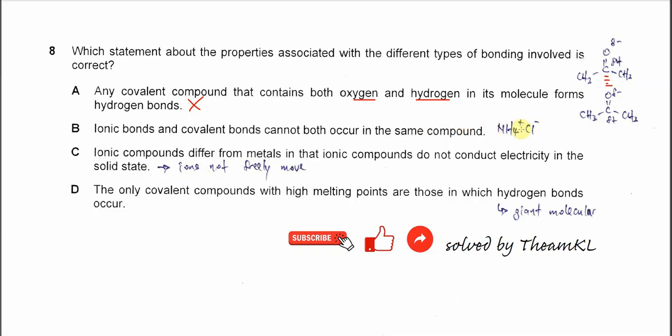Compound like ammonium chloride, both bonds can occur in the same compound. The ammonium, within the ammonium, there are the covalent bonds there. And between the ammonium and the chloride is the ionic bond. So B is wrong.